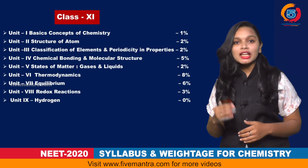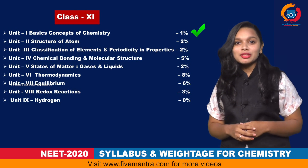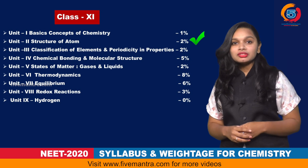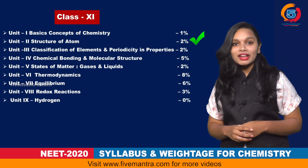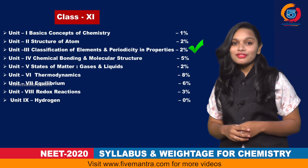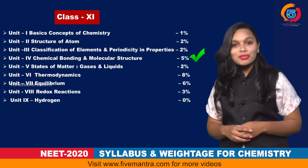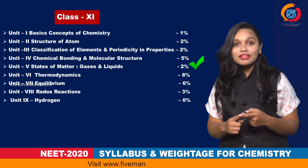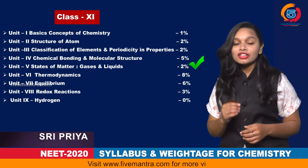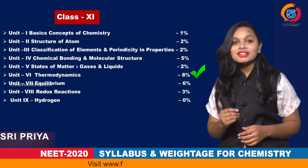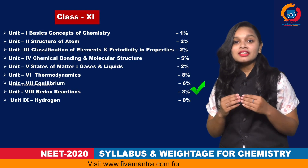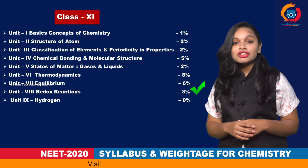The intermediate first year chemistry consists of: Unit 1, Basic Concepts of Chemistry, with 1% weightage for the NEET examination; Unit 2, Structure of Atom, with 2% weightage; Unit 3, Classification of Elements and Periodicity in Properties, with 2% weightage; Unit 4, Chemical Bonding and Molecular Structure, with 5% weightage; Unit 5, States of Matter (gases and liquids), with 2% weightage; Unit 6, Thermodynamics, with 8% weightage; and Unit 7, Equilibrium, with 6% weightage.